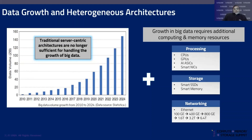Storage spans SmartNICs, smart SSDs, and smart memory. Networking ranges from 100 gigabits per port all the way to 6.4 terabits per second per port. From the perspective of server architecture, the traditional CPU-centric design is evolving into a heterogeneous architecture.